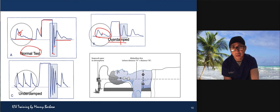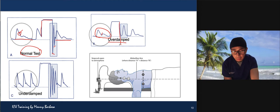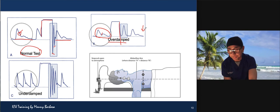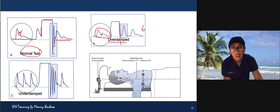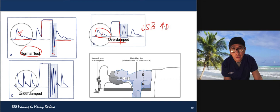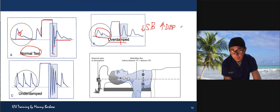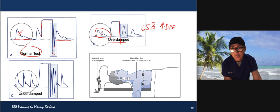So what are the reasons you have an overdamped system, and what is the effect on hemodynamics? Number one: it will give you a falsely low systolic pressure and a falsely high diastolic pressure. That's not good in your arterial line. You also won't have a dicrotic notch.